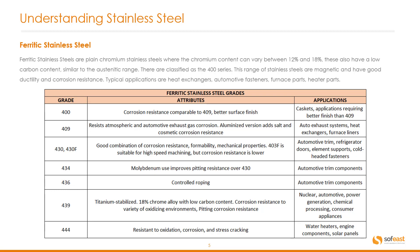Typical applications for ferritic stainless steels are heat exchangers, automotive fasteners, furnace parts, and heater parts. We have a table below with the full range of 400 grades along with their attributes and typical applications for each of the grades.